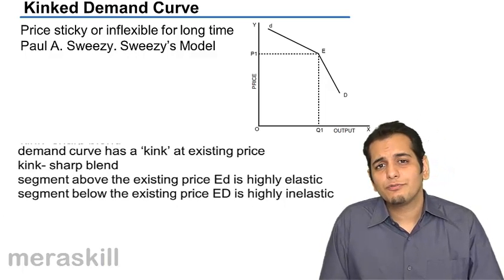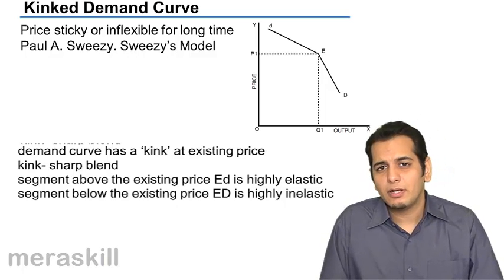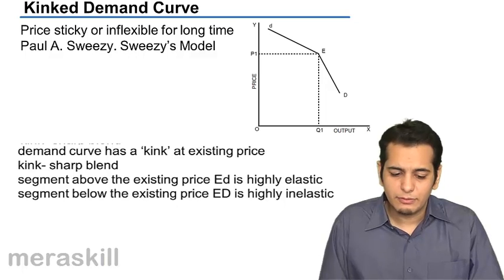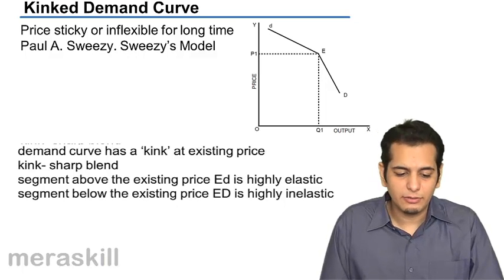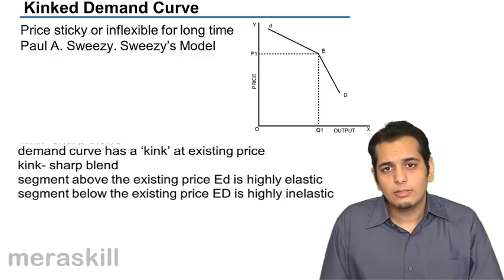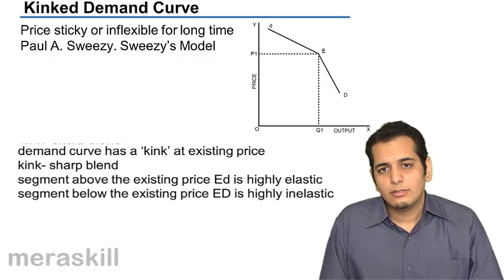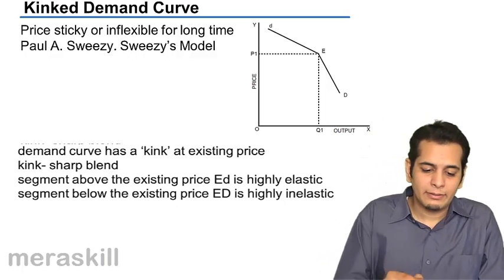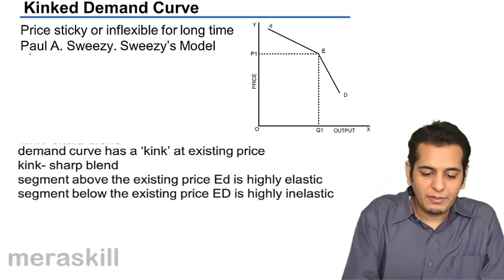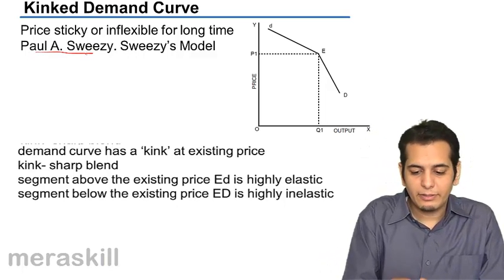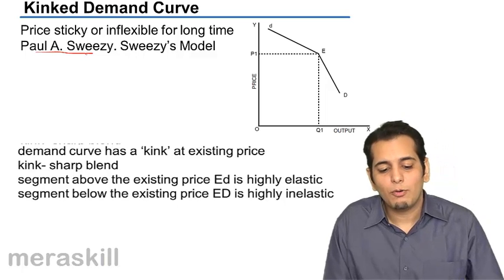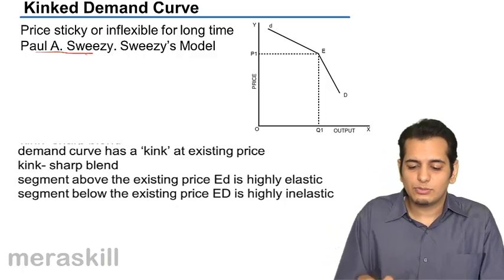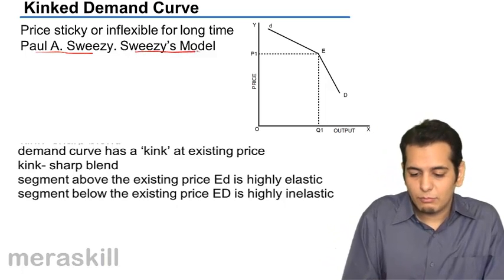This brings us to the final topic under oligopoly, which is the kinked demand curve. The model was invented by Dr. Paul A. Sweezy, and thus it is called Sweezy's model.